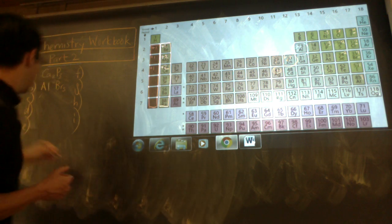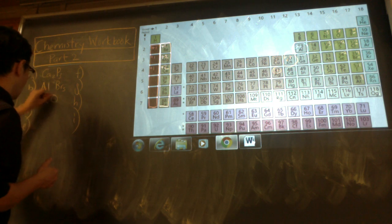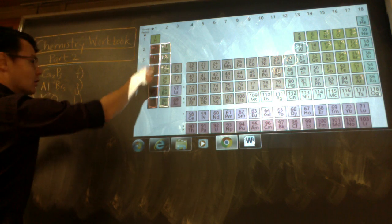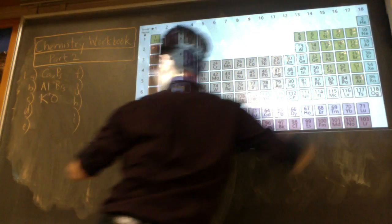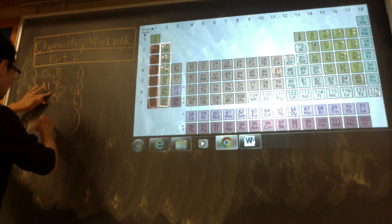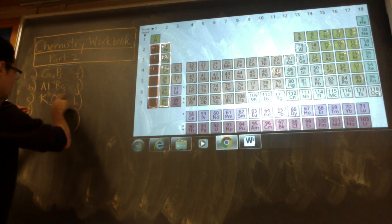Potassium oxide. K, O - K one plus, O two minus, K2O.